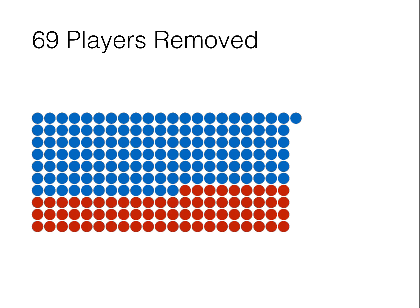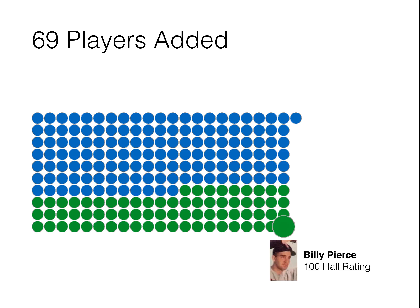So what ends up happening is 69 players are removed. I also maintain a personal Hall of Fame at the Hall of Stats website, and I don't agree with all of these removals — there are 19 players that the Hall of Stats removes that I would actually keep in. Likewise, 69 players are then added, and there are about 19 of those I don't agree with either. The 100th guy, who happens to be Billy Pierce, is given a Hall Rating of 100. So anybody above 100 is in the Hall of Stats, and anyone below is out.